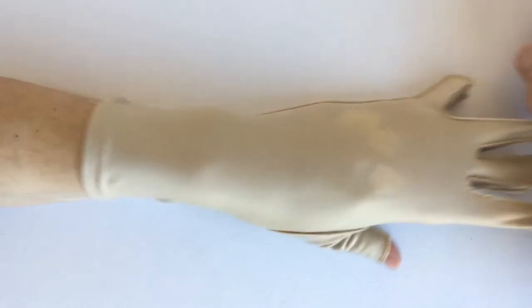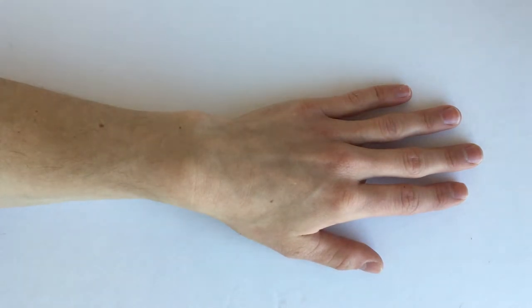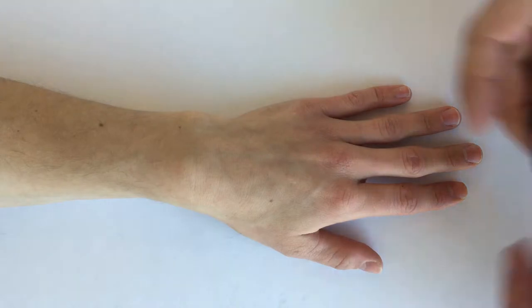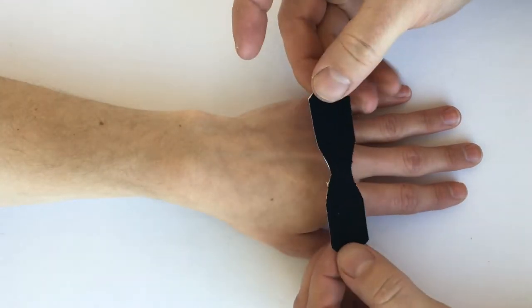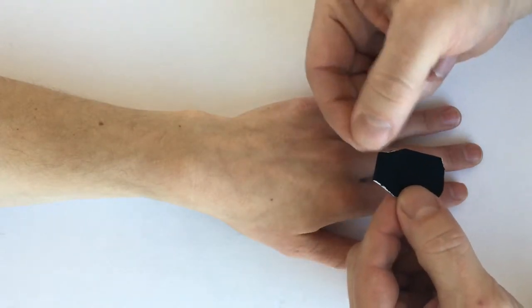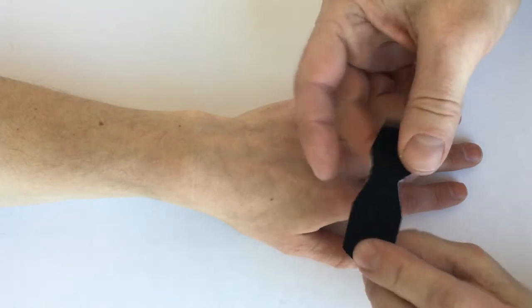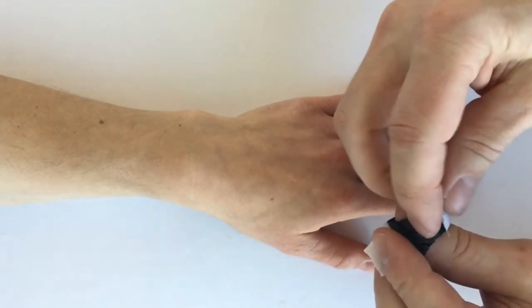Another way to provide some compression in those web spaces is with some kinesio tape. So what I do is I just use a four inch long piece of kinesio tape, cut it one inch wide, fold it over to cut it into an hourglass shape, and then put those on each web space.